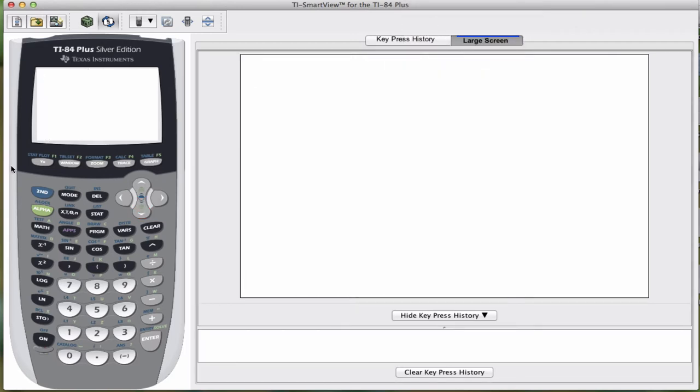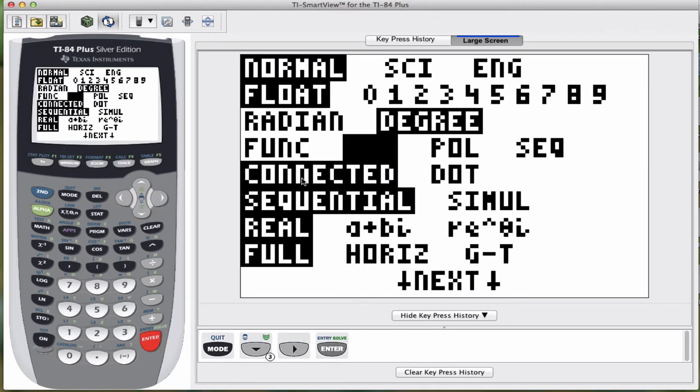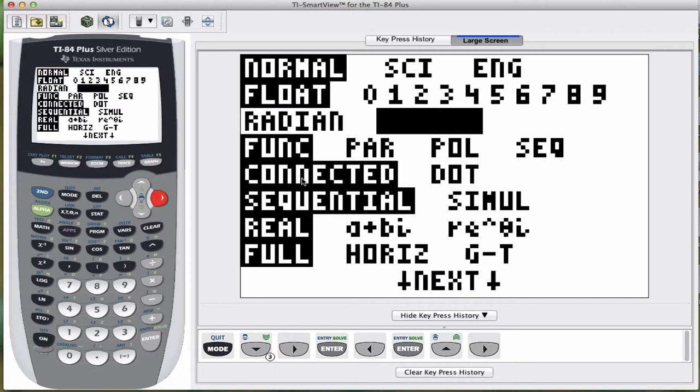So now we're going to go ahead and graph. And the first thing you might want to check is your mode. We do want to be in function mode. And we want it to be connected. So you want to double check that those two things are correct. Let's say I was in the wrong mode. I would use the arrows to go on top of whatever I wanted and press enter. So once again, I said I want function, so I'm moving on top of that and pressing enter. Quite honestly, the mode that we change the most is radians and degrees. But since we're not dealing with angles at the moment, that is irrelevant.